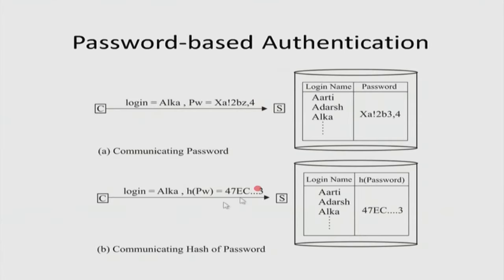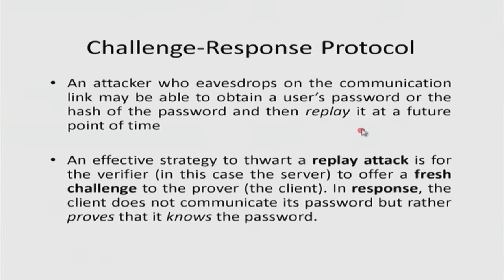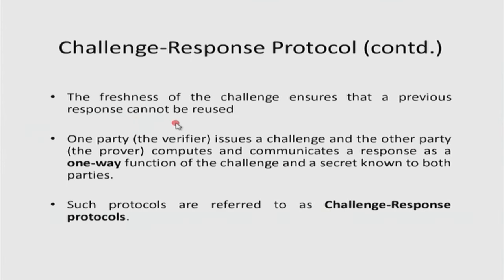In the context of the previous example, an attacker sees the hash of the password and simply replays the entire thing to the server at some future point in time, making the server think it is actually Alka. This is an impersonation attack — in particular, a replay attack. An effective strategy to thwart a replay attack is for the verifier to offer a fresh challenge, typically called a nonce — a random number. The freshness of the challenge ensures that a previous response cannot be reused.